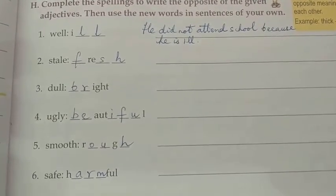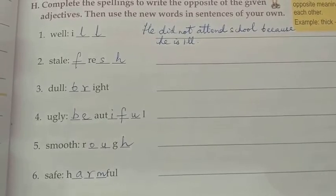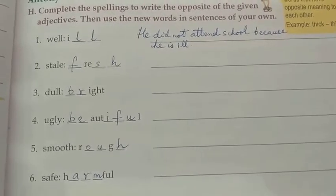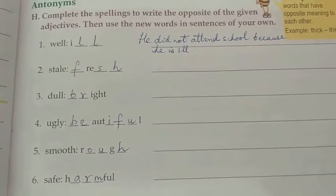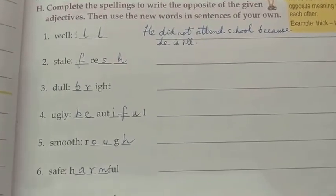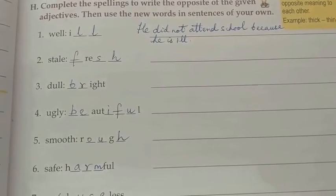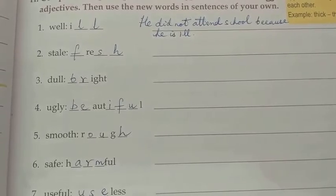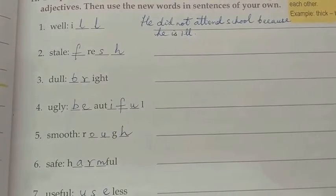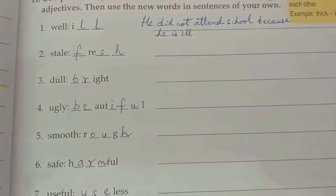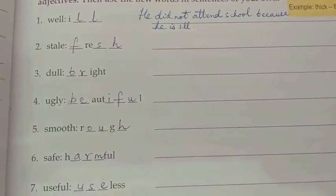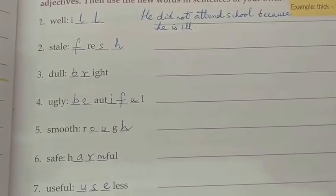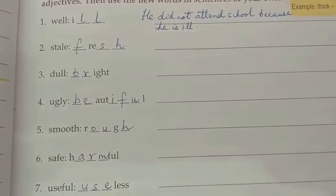Number two: stale. Stale ka antonym hai fresh — F-R-E-S-H. Basi, taza. A fresh ka sentence aap khud apne hisaab se bana lo. Number three: dull. Bright — B-R-I-G-H-T. Number four: ugly. Iska antonym hai beautiful — B-E-A-U-T-I-F-U-L.